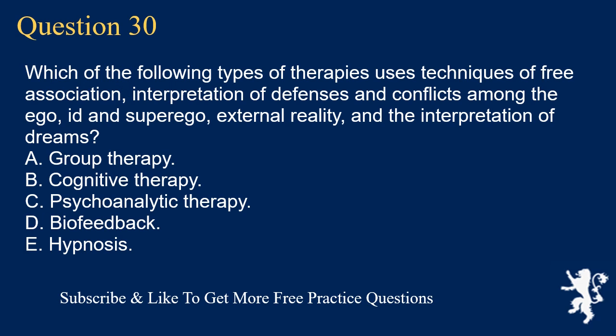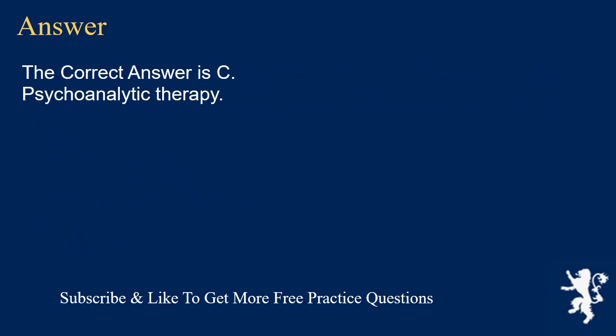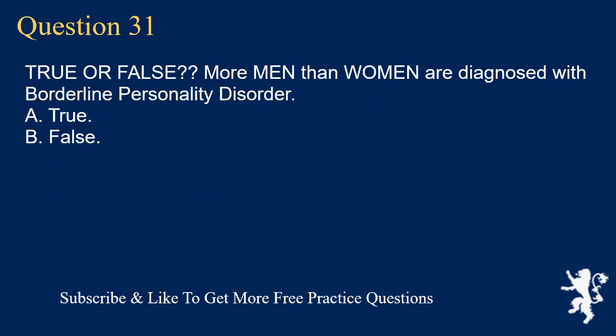Question 30. Which of the following types of therapies uses techniques of free association, interpretation of defenses and conflicts among the ego, id and superego, external reality, and the interpretation of dreams? A. Group Therapy. B. Cognitive Therapy. C. Psychoanalytic Therapy. D. Biofeedback. E. Hypnosis. The correct answer is C. Psychoanalytic Therapy.